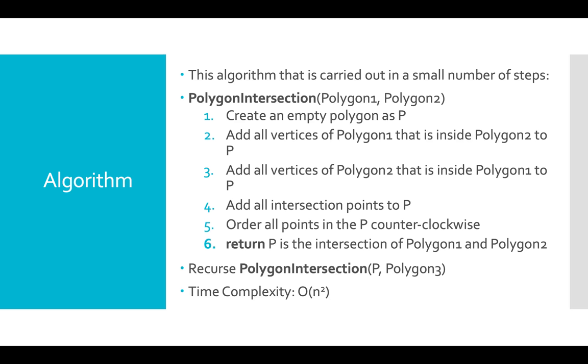Moving on to the algorithm. In this project, I'll implement an algorithm that is carried out in a small number of steps. The function polygon intersection will take two inputs, polygon 1 and polygon 2. First, I'll create an empty polygon as P.